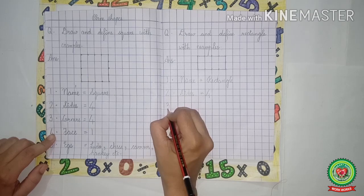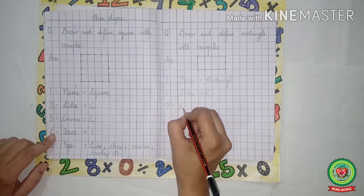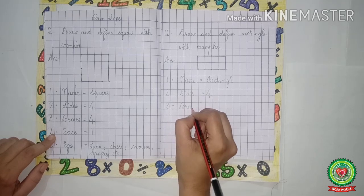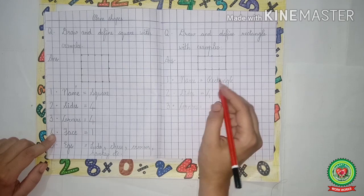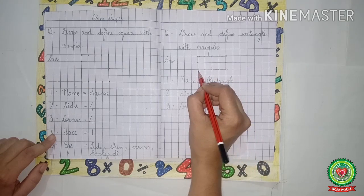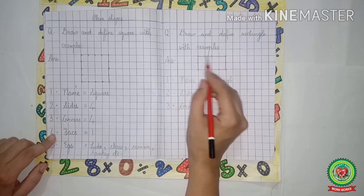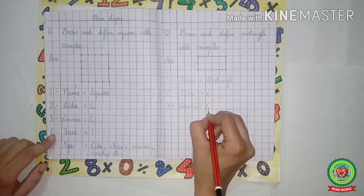Now leave one line, three dot. Corners, C-O-R-N-E-R-S, corners. Now, how many corners rectangle has? One, two, three, four. So we will write four here.